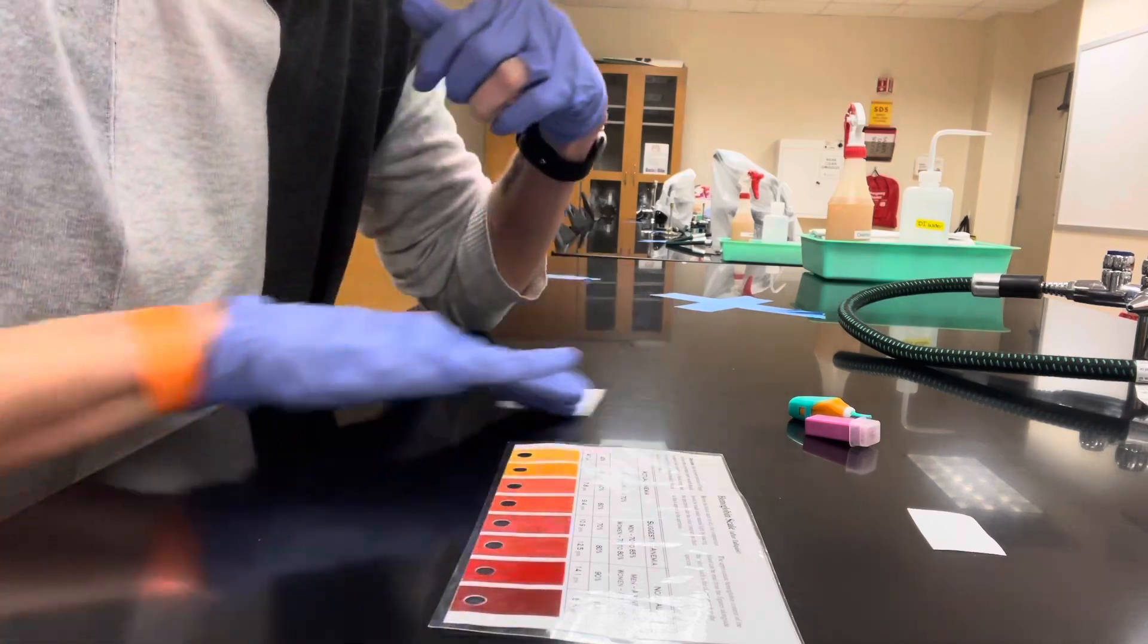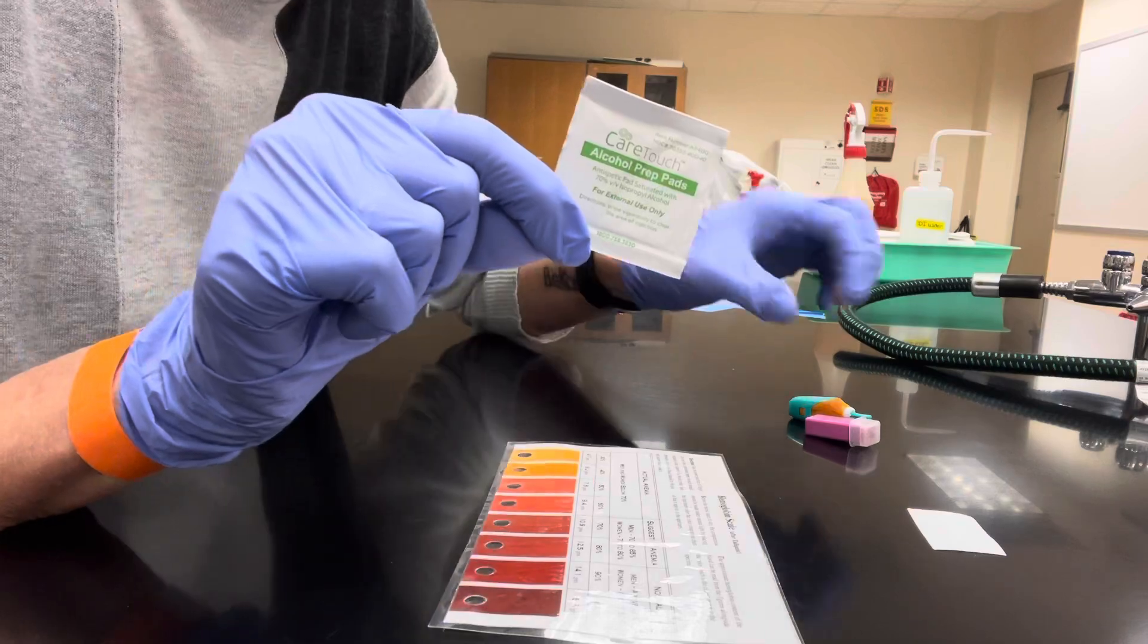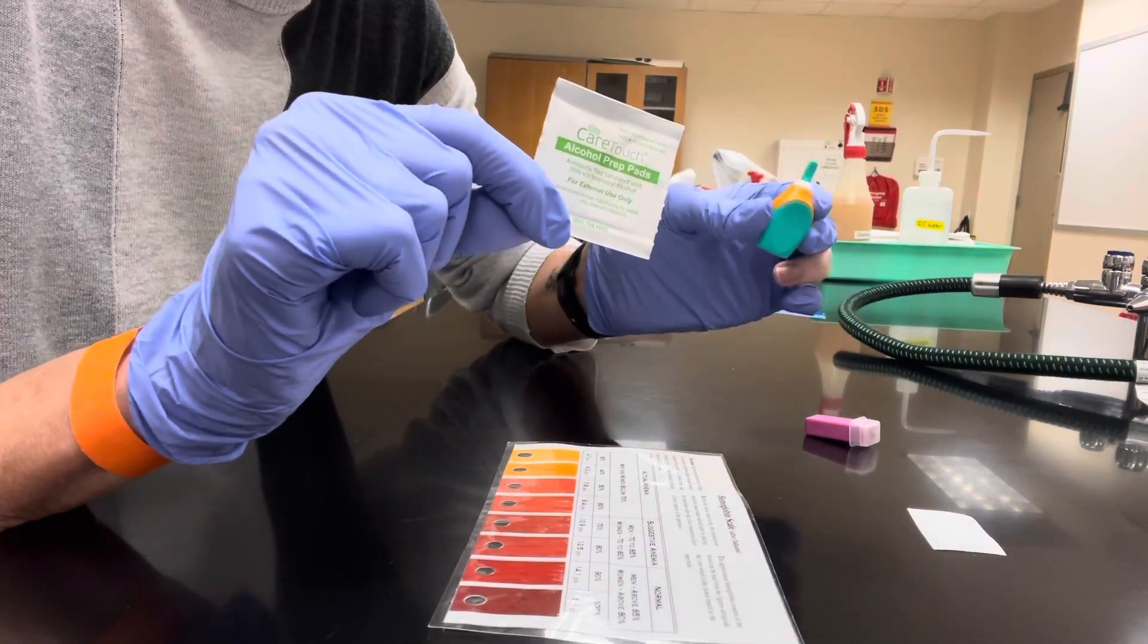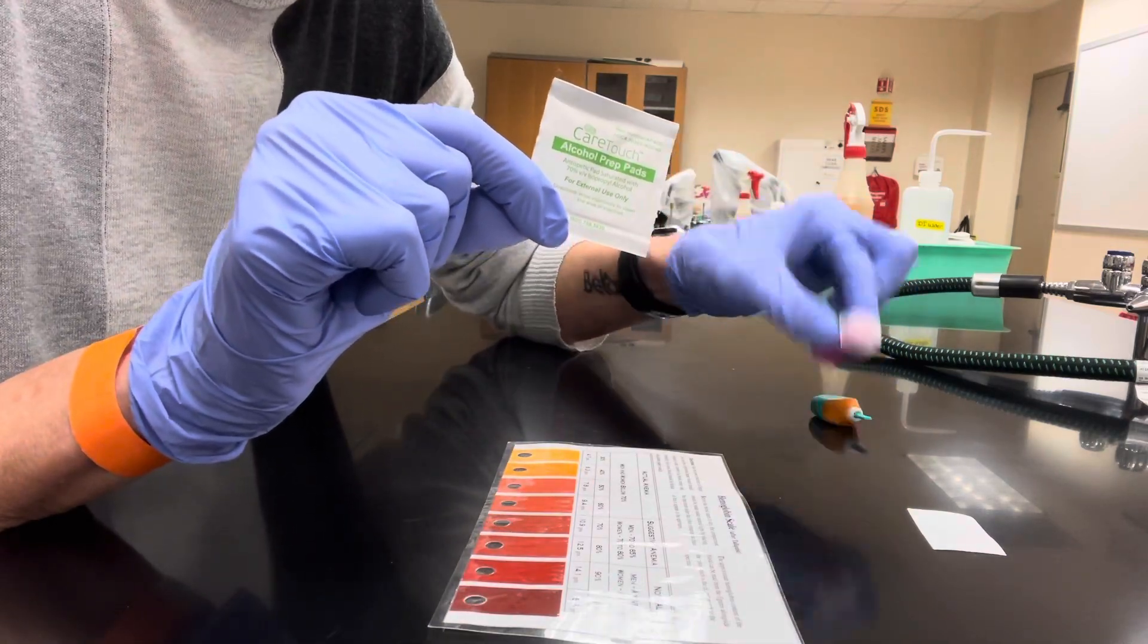So in your kit, take out an alcohol towelette, a lancet. It could look like this, or it may look like this.